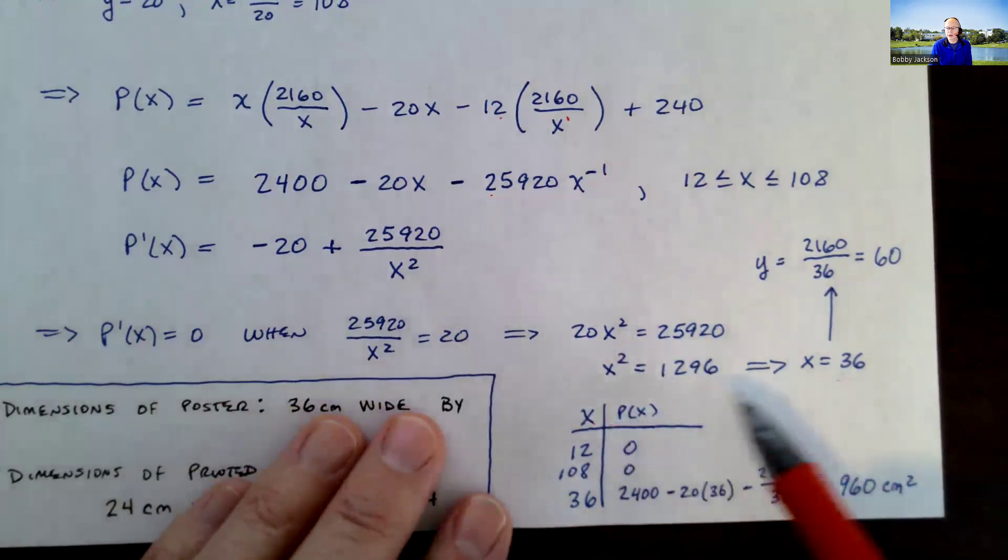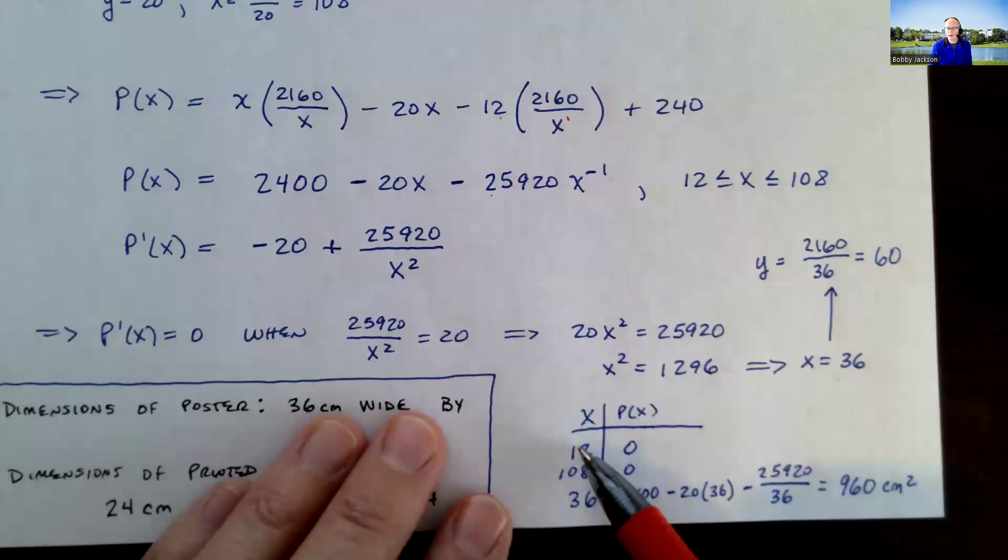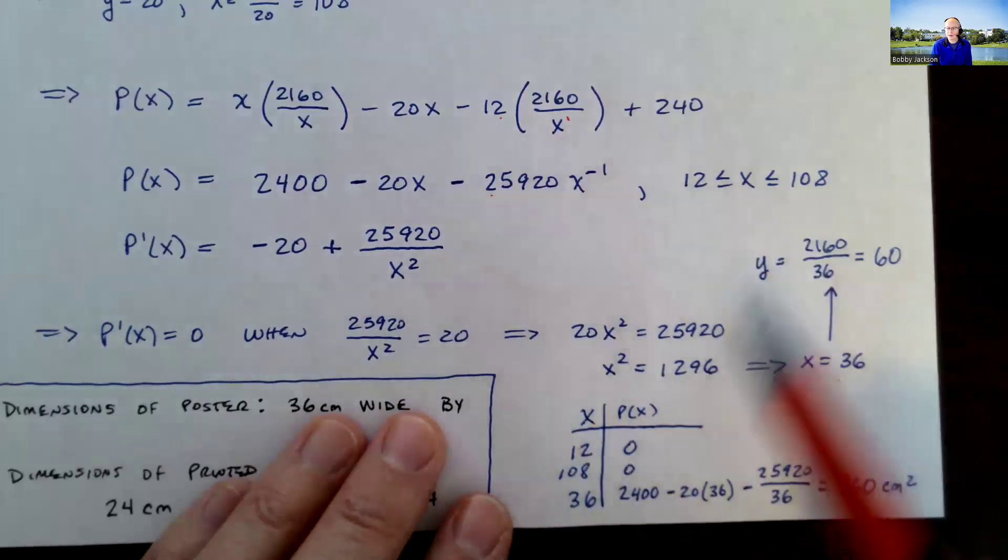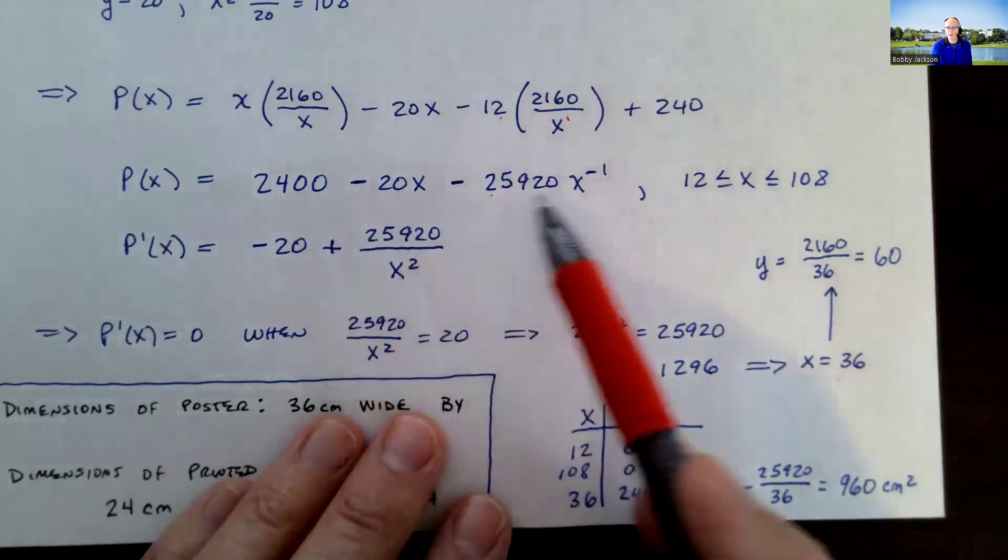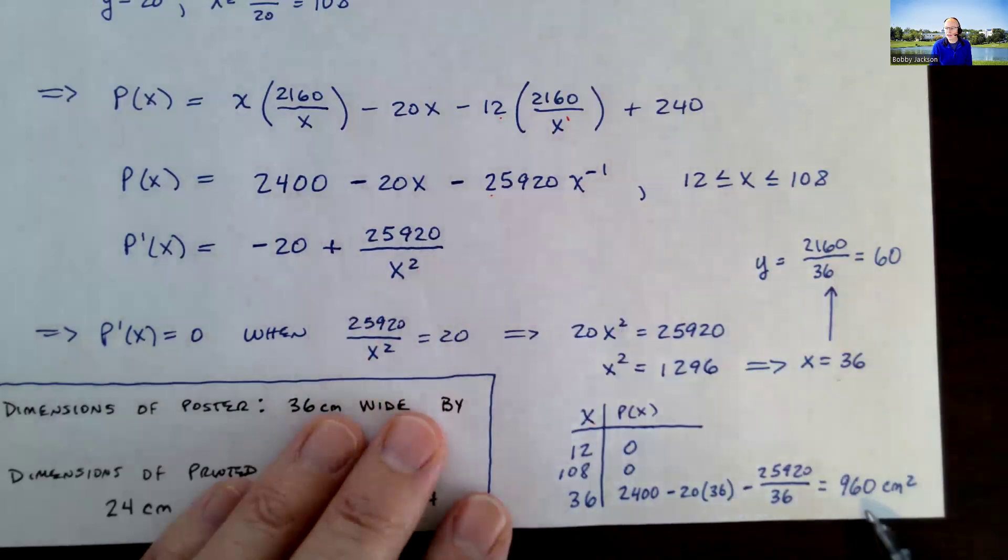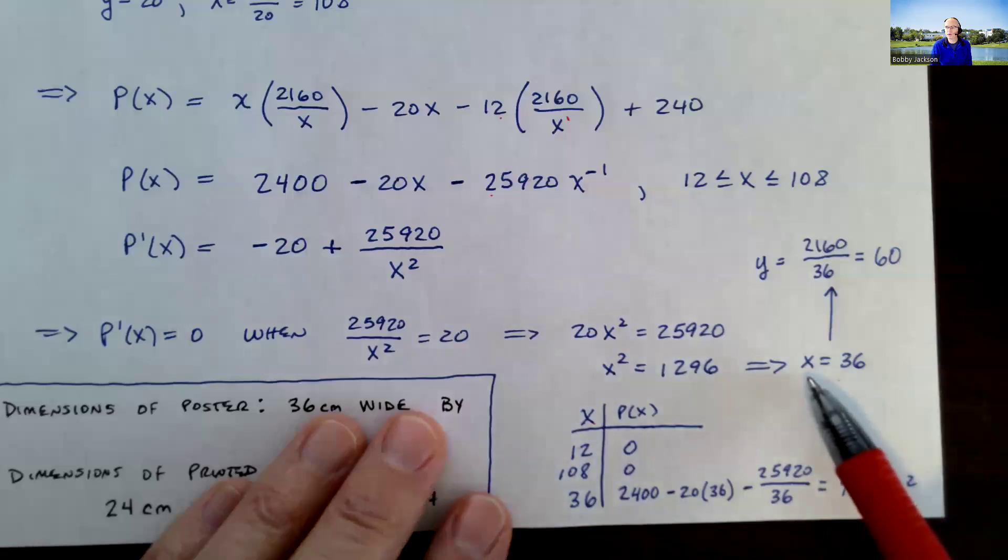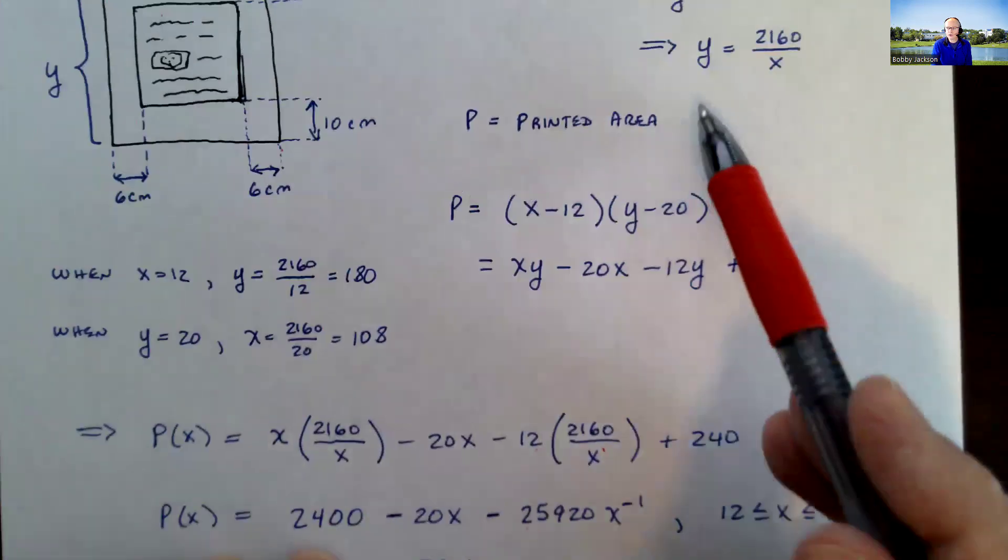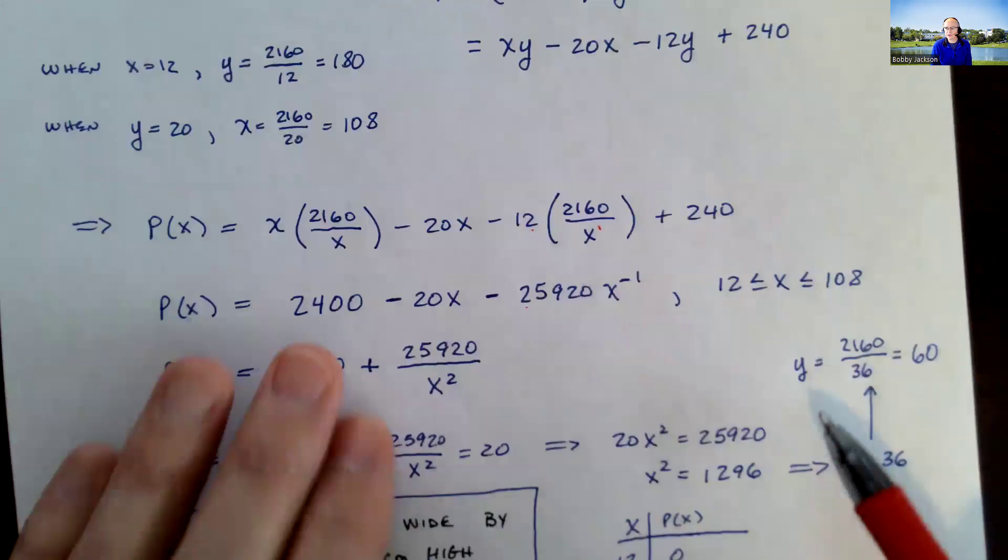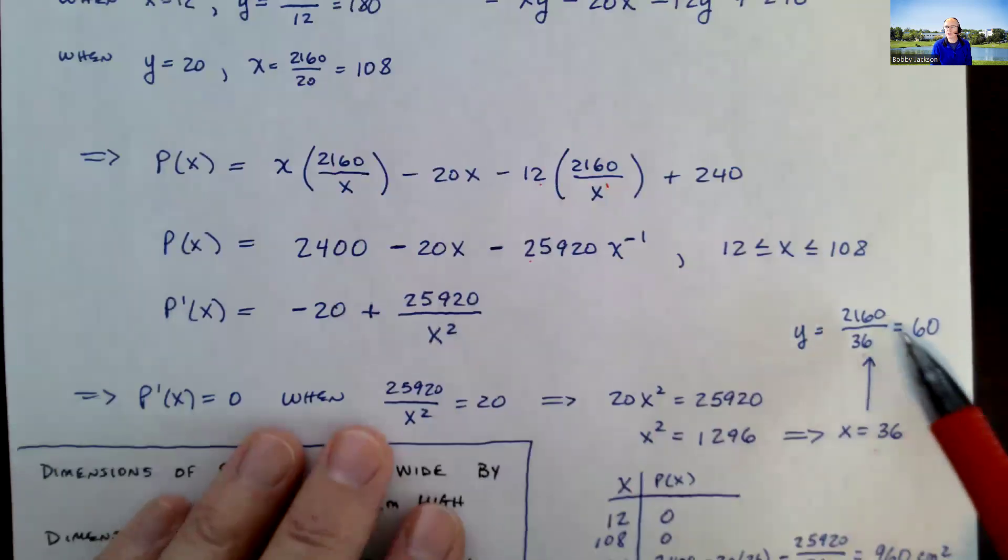And as we said, if I do a table of values here to show that I have a maximum at the endpoints, 12 and 108, right? The printed area is zero. But at 36, if I plug 36 into this function here and evaluate it, I get 960. So 960 square centimeters is our maximum printed area. And that occurs when the poster's width is 36. What's the value of y? Remember, y is 2160 divided by x. So in this case, x is 36. And we get 60.